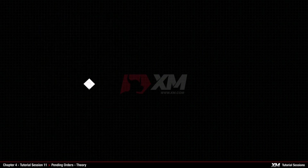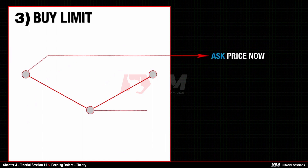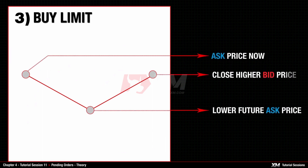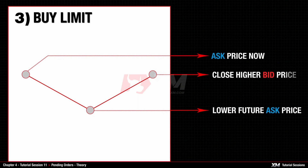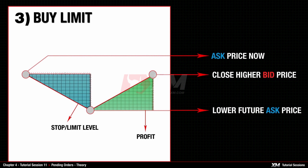The next pending order type is Buy Limit. All Buy orders are opened at the Ask price and closed at the Bid price. Buy Limit orders should be opened at the lower future Ask price. To make a profit on this type of order, the Closing Bid price needs to be higher than the opening Ask price.